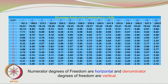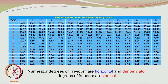Similarly, for another table where alpha = 0.01, if the degrees of freedom are 7 (numerator) and 8 (denominator), the corresponding F value is 6.18.